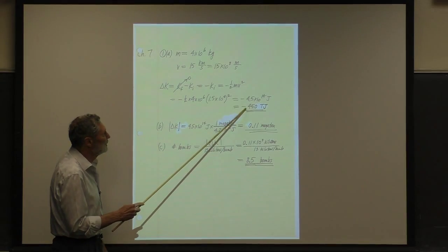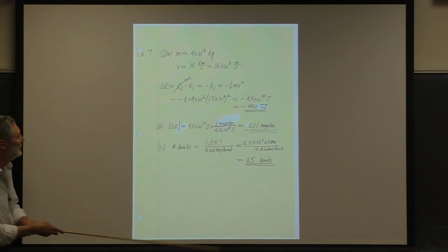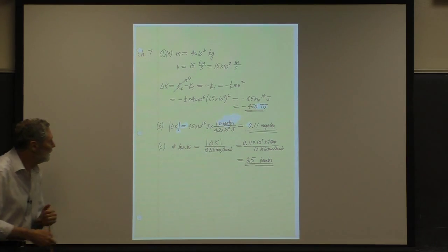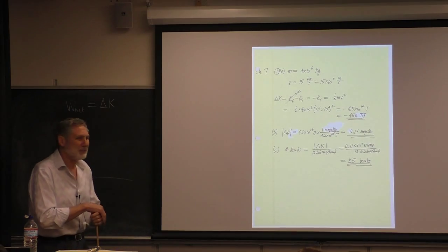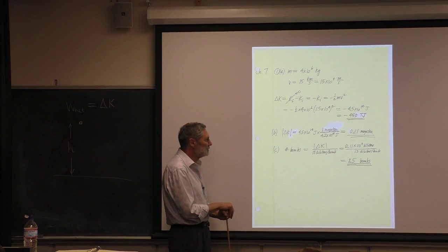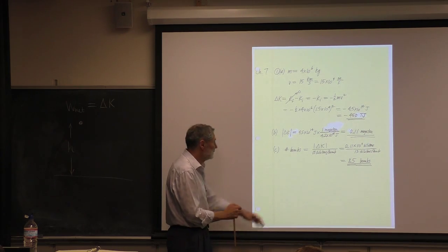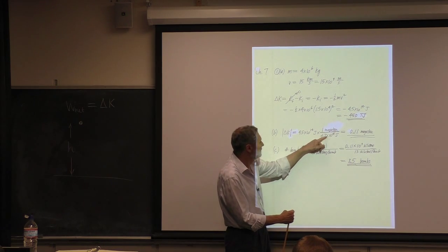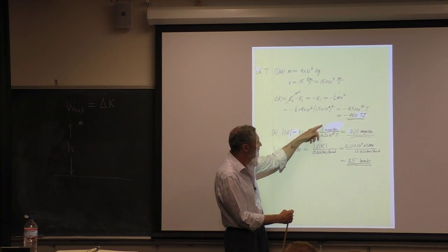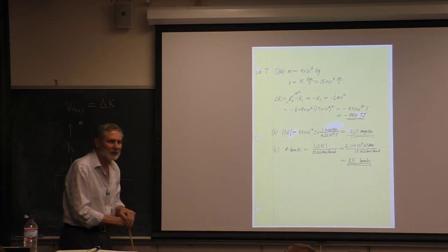We get 450 terajoules as the amount of energy lost. The change is negative. We can convert that to megatons — there are 4.2 times 10 to the 15th joules per megaton of TNT, that's a million tons of TNT. We get 0.11 megatons.